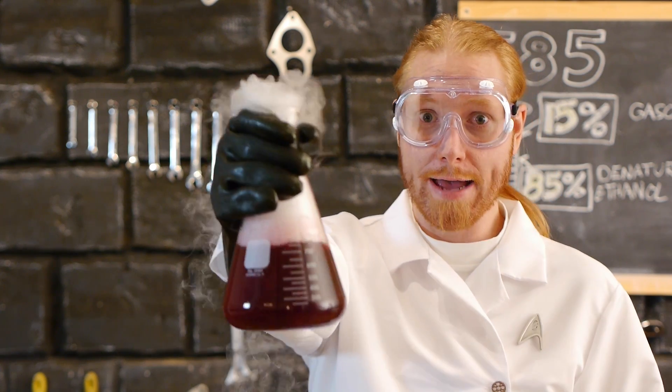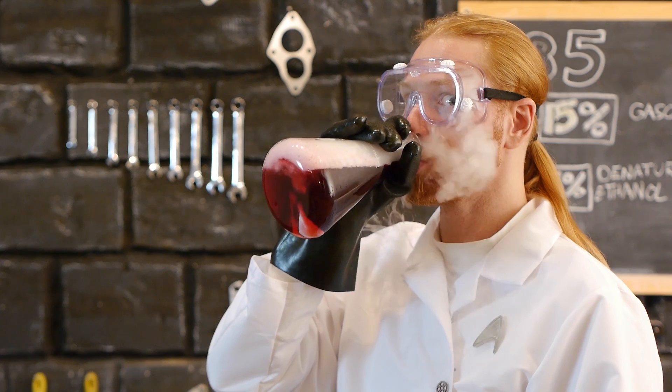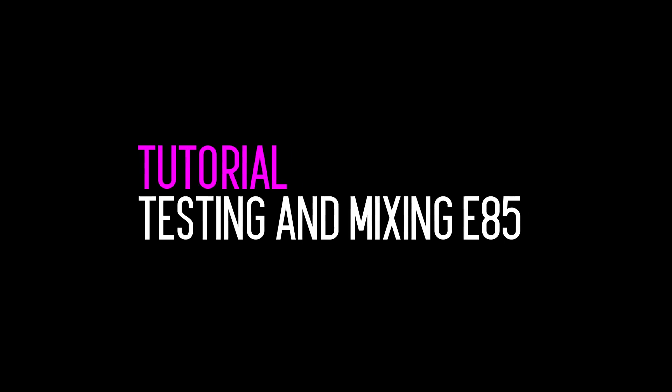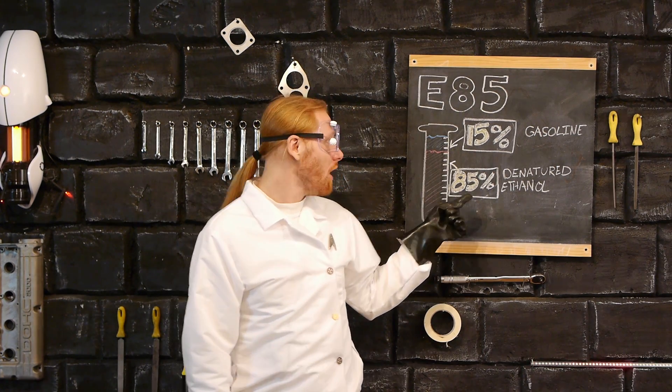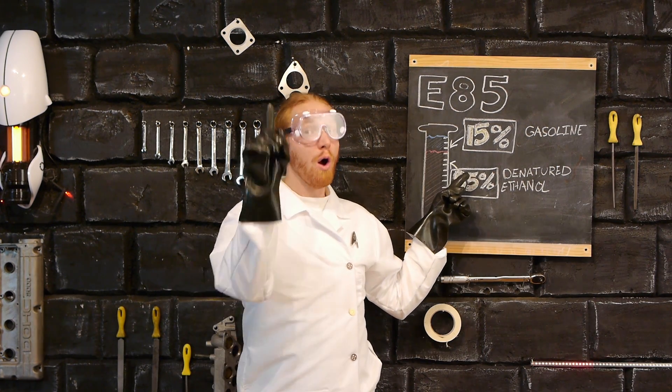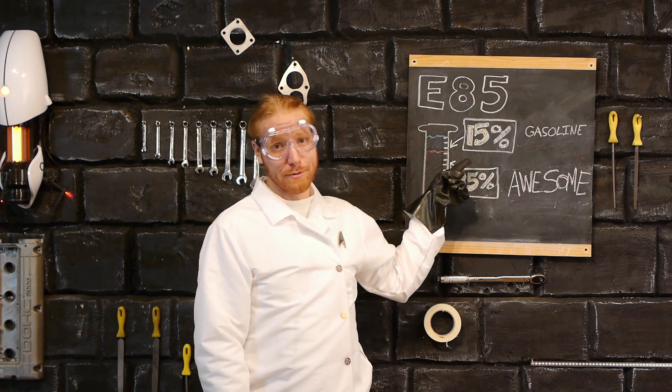In this episode of Velocity Labs, we're doing science. E85 is an ethanol fuel blend that's made out of 85% denatured ethanol and 15% gasoline, or in layman's terms, 85% awesome and 15% meh.